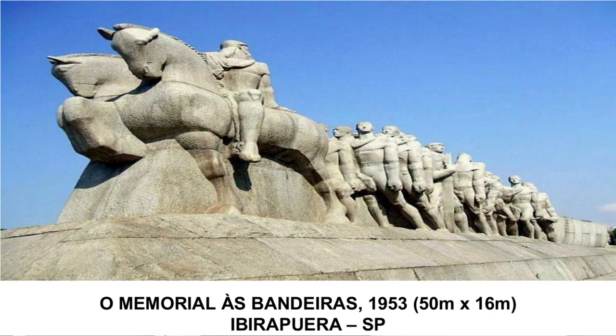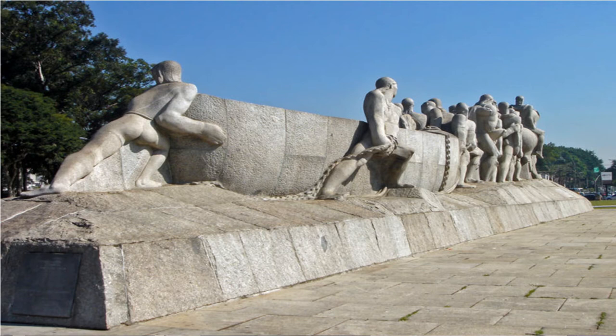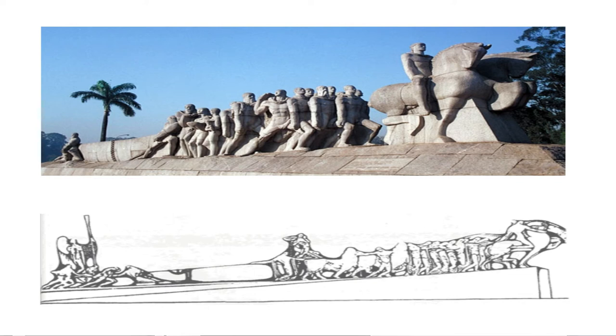O maior destaque é o Memorial às Bandeiras, uma construção monumental com 50 metros de extensão por 16 de altura. Na composição, à frente você tem os bandeirantes. Há uma separação, e atrás negros e índios empurrando um barco, deixando subentendido que estão próximos a um rio. Abaixo vemos um dos momentos do projeto original — nota-se como foi mudando, o que é bastante natural: da forma como você pensa inicialmente para a forma final há uma grande diferença.